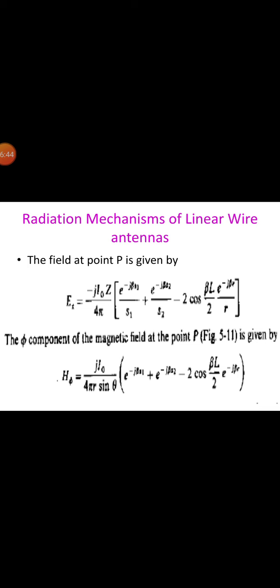The maximum current is I_0 as shown in the figure. The z-component of the electric field at point P is: E_z = -j * I_0 * η / (4π) * [e^(-jβs1)/s1 + e^(-jβs2)/s2 - 2*cos(β*L/2) * e^(-jβr)/r]. The phi-component of the magnetic field at point P is: H_phi = j * I_0 / (4π * r * sinθ) * [e^(-jβs1) + e^(-jβs2) - 2*cos(β*L/2) * e^(-jβr)].